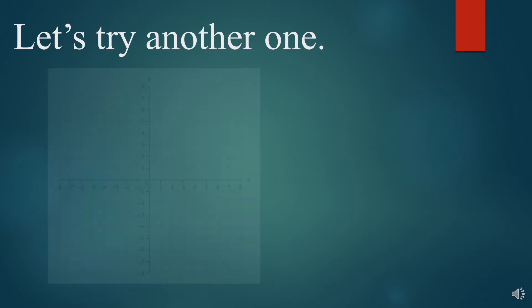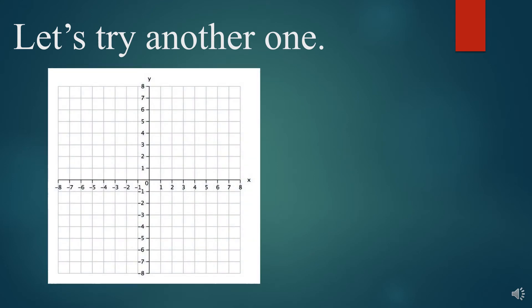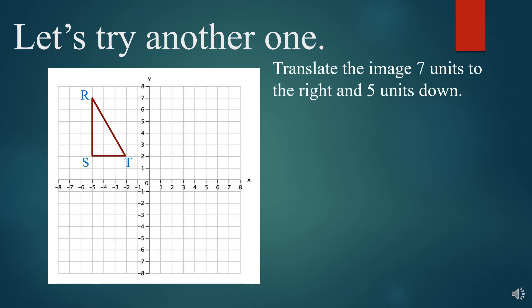Now let's try another one. Again, I'm going to use a graph just so you can visualize what's happening. We have this triangle, we called it RST again, and what we're asked to do on this one is to translate the image 7 units to the right and 5 units down, so we are going to be moving at 7 units to the right, 5 units down, and this is what we get for our new image, R prime, S prime, and T prime.